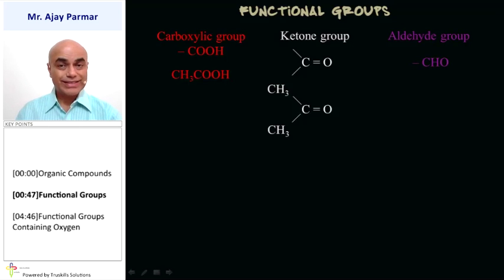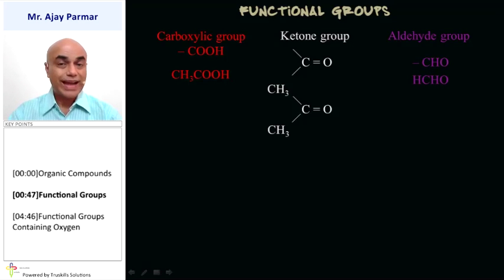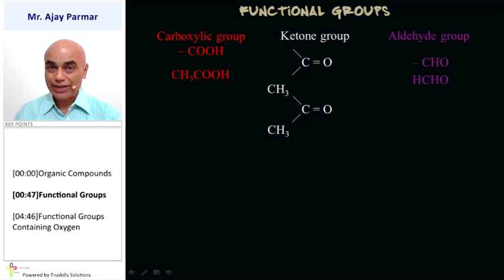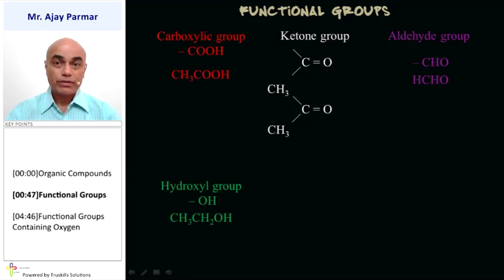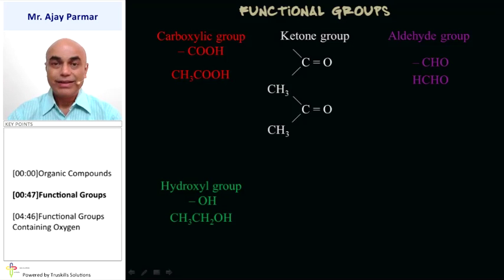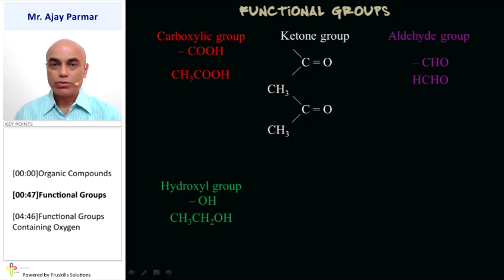Aldehyde is the next group, that is CHO. HCHO is either called formic acid or methanal — the same substance, HCHO, and it is a member of the aldehyde group. The hydroxyl group, the interesting one, is OH, also known as the alcohol group. The formula written here is that of ethanol, that is ethyl alcohol, C2H5OH or CH3CH2OH.